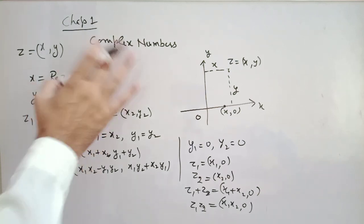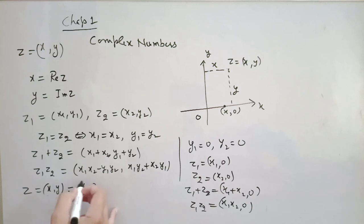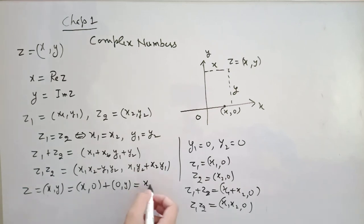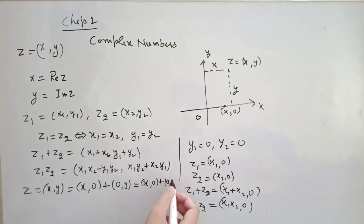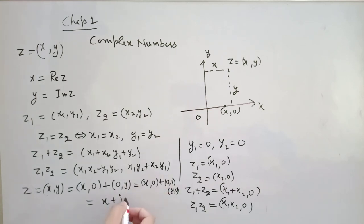So far we have defined complex numbers, real part, imaginary part, equality, addition, and product. After that, any complex number (x, y) can be written as (x, 0) + (0, y), which can further be written as (x, 0) + (0, 1)·(y, 0). We denote (x, 0) simply by x — it's a real number — and (0, 1) by the specific notation iota (i).